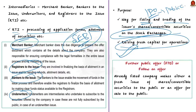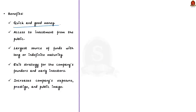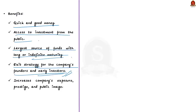FPO, also called a follow-on offer, is where an already listed company makes either a fresh issue of shares to the public or an offer of sale to the public. The benefits of an IPO include: it is a way of making quick and good money; it provides access to investment from the entire investing public; it is the largest source of funds with long or indefinite maturity for the company; and it is an exit strategy for founders and early investors to realize the full profit from their private investment. It also increases the company's exposure, prestige and public image, which can help sales and profits.